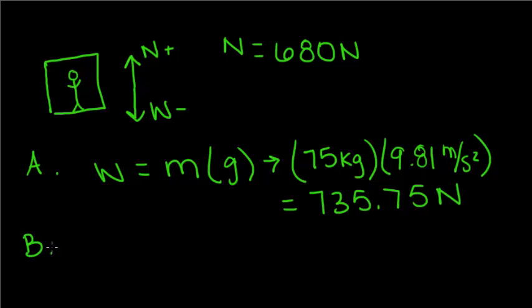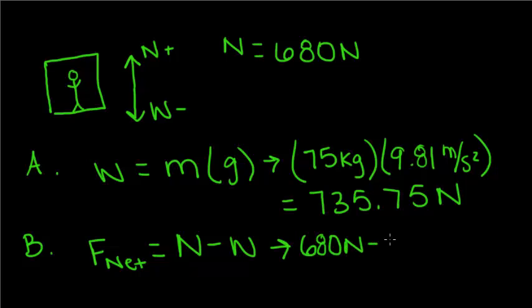we use this weight to find his net external force acting on the man. We do this by subtracting his weight from the normal force. We're subtracting because this weight we decided was negative. So, we're going to do 680 newtons minus 735.75 newtons,